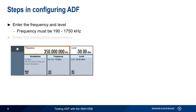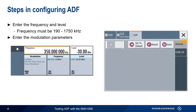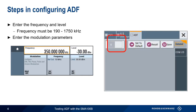The second step is configuring the modulation parameters, and this is done by choosing ADF under the available modulation standards. The only setting under the general tab is turning ADF on or off, so we'll concentrate on the COMID tab.